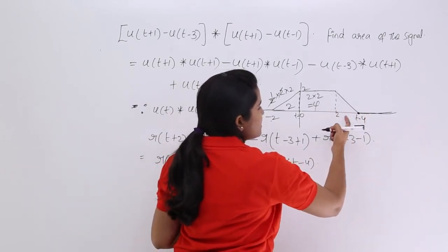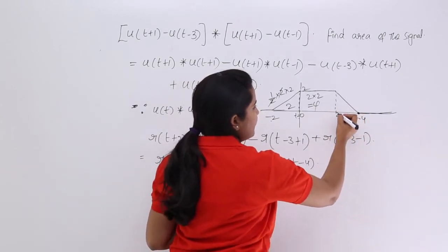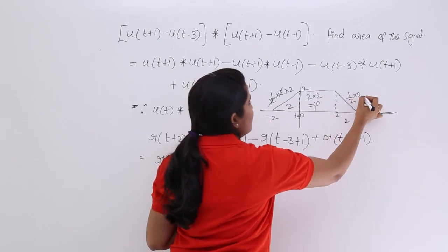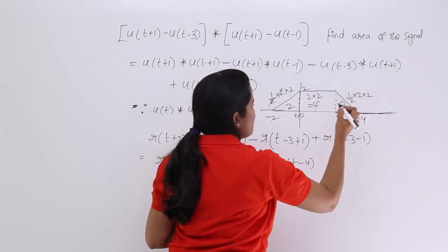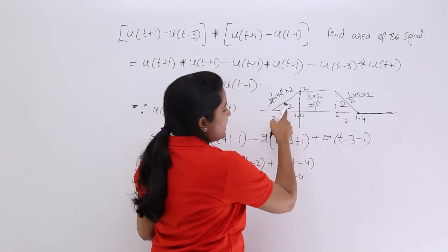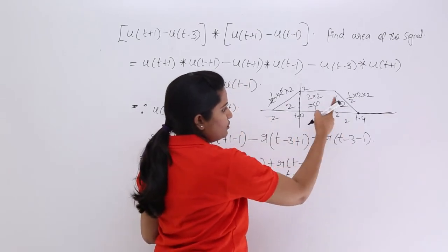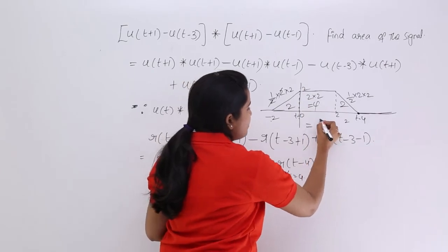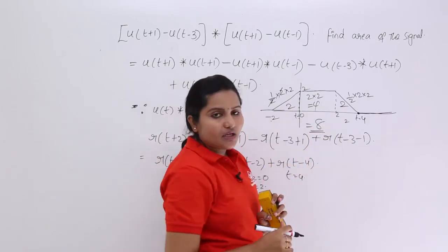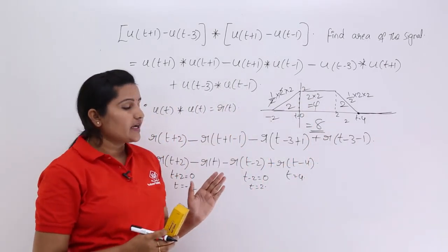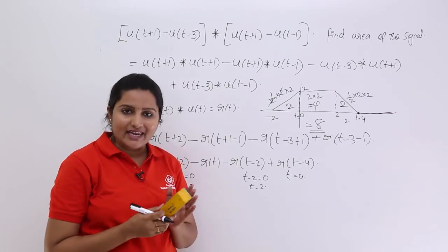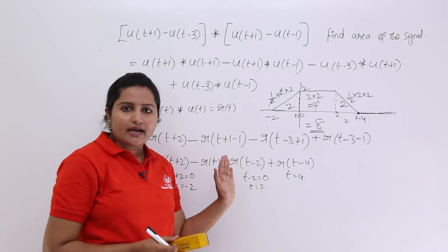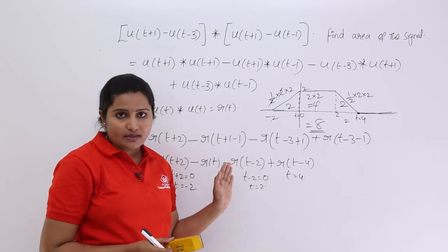The third part is also a triangle with half × length × height = half × 2 × 2 = 2. So total area of the signal is 2 + 4 + 2 = 8. The total area of the signal is equivalent to 8. This is how we find the area of the resultant signal using convolution and the unit step procedure.